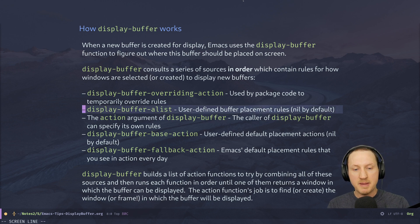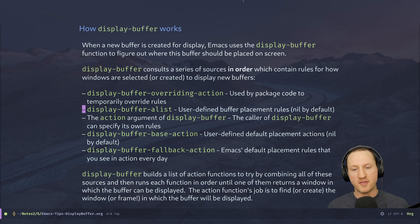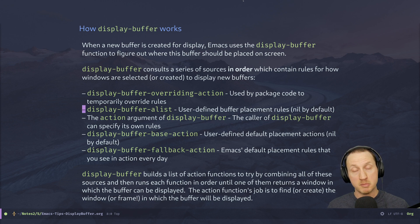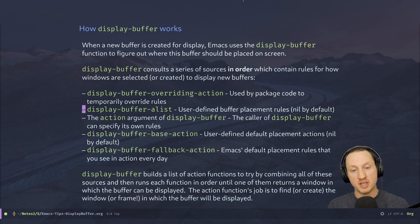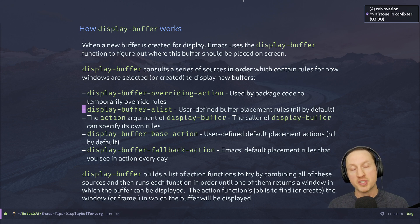Next is display-buffer-alist, a user-defined buffer placement rule variable. We won't discuss this in this video because it gets more complex, but it gives you fine-grained control over where various buffers get placed in the windows in Emacs. This is very powerful and we're going to do a whole separate video on this.